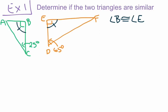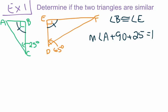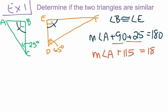Let's go ahead and solve for angle A. We write: measure of angle A plus 90, which is the measure of angle B, plus 25, which is the measure of angle C, equals 180. Combining like terms, 90 and 25 give us 115. So the measure of angle A plus 115 equals 180. Subtracting 115 from both sides, the measure of angle A equals 65 degrees.